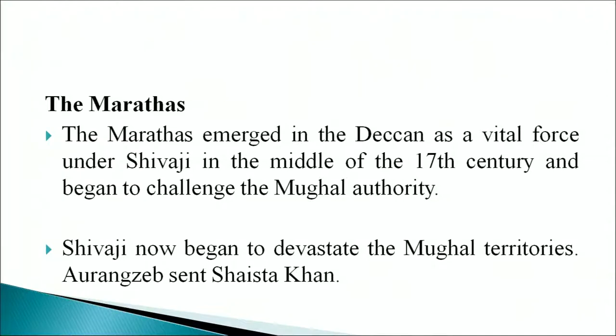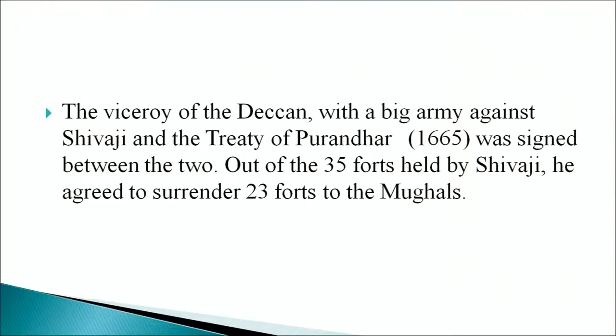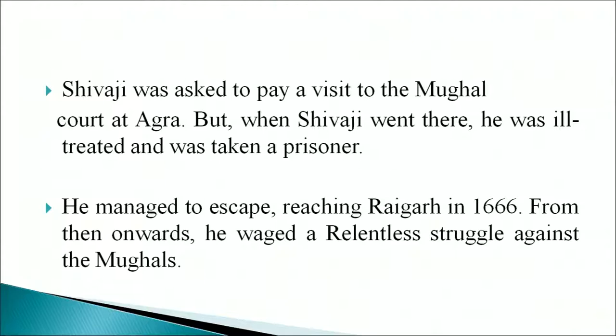The Marathas emerged in the Deccan as a vital force under Shivaji in the middle of the 17th century and began to challenge Mughal authority. Shivaji devastated the Mughal territories, and Aurangzeb sent Shaista Khan, the viceroy of the Deccan, with a large army against him. The Treaty of Purandar was signed in 1665. Out of the 35 forts held by Shivaji, he agreed to surrender 23 to the Mughals. The Marathas posed a major challenge to the sovereignty of the Mughals. Shivaji was asked to pay a visit to the Mughal court at Agra, but was ill-treated and taken prisoner. He managed to escape, reaching Raigarh in 1666, from where he waged a relentless struggle against the Mughals.